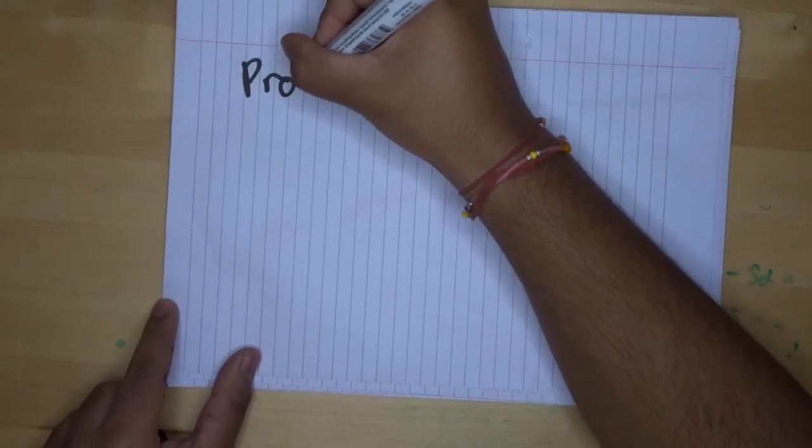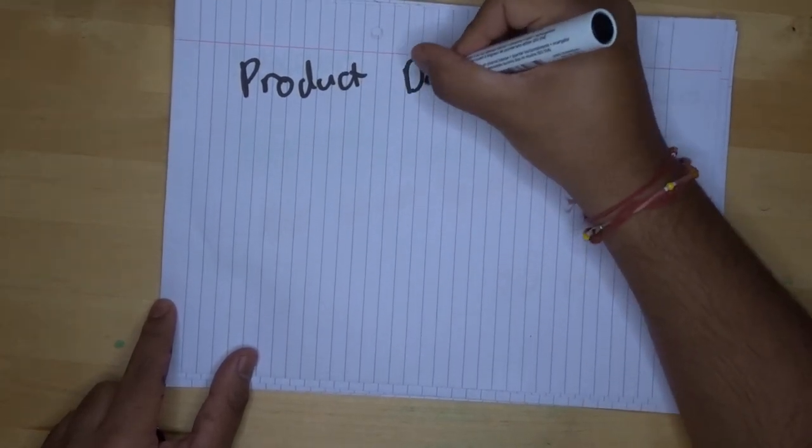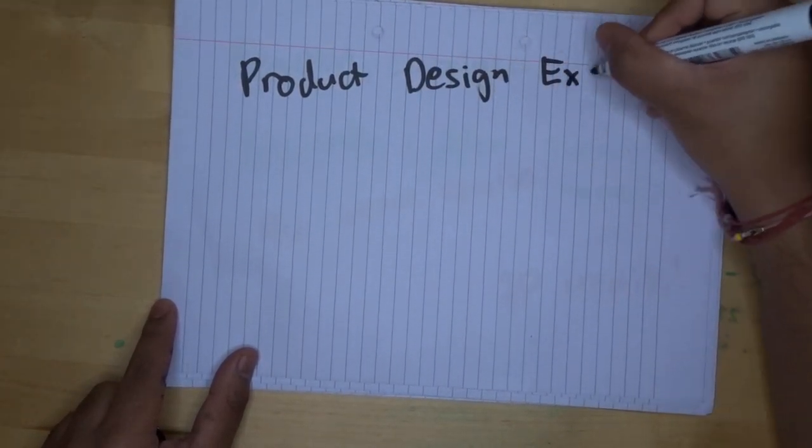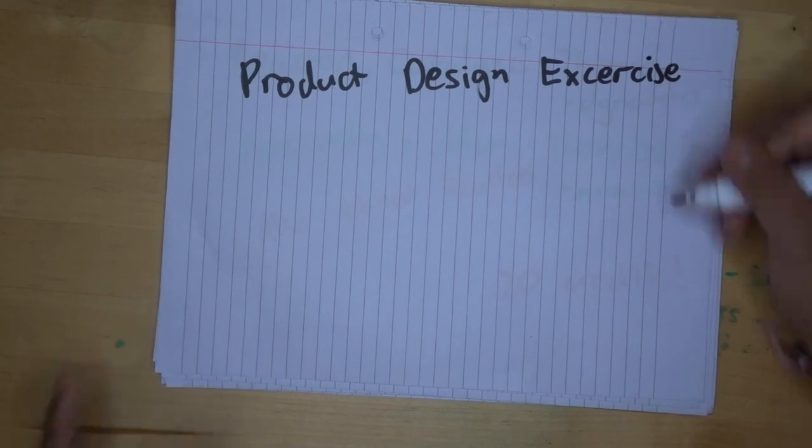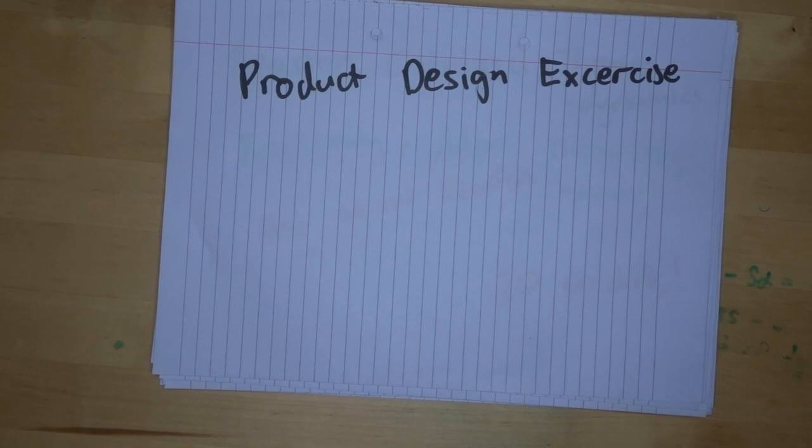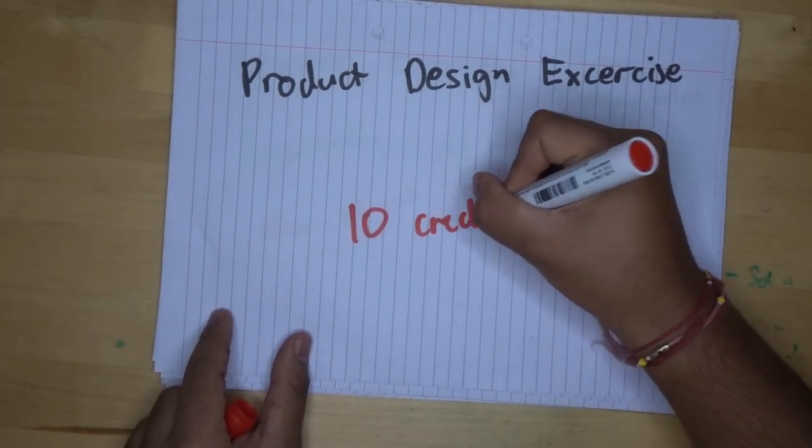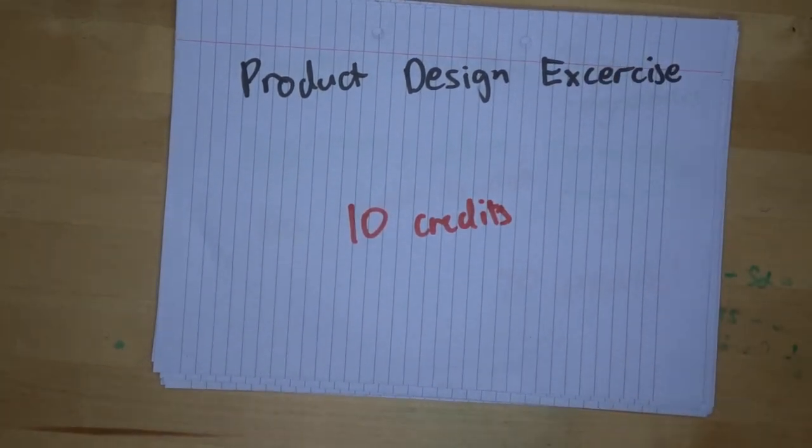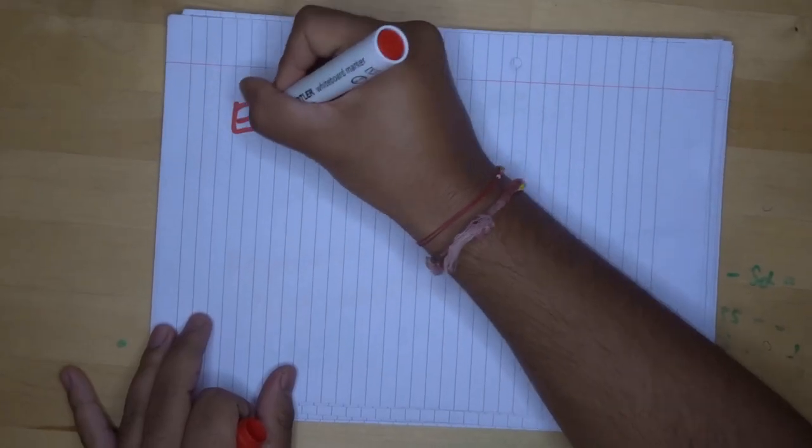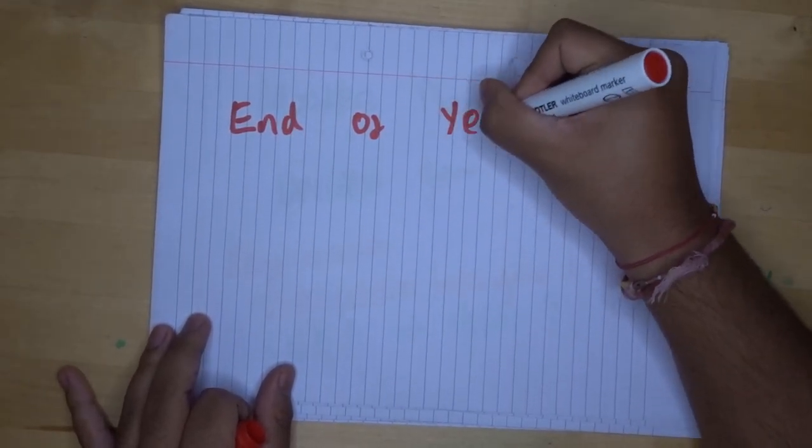The last module is product design exercise. This module is worth 10 credits and it is done in term two and therefore I haven't done it yet, so I can't tell you much about it. And I'm not even sure whether I am allowed to tell you about it, so that's all I'm going to say about this module. And that brings us to the end of year two.